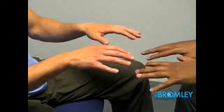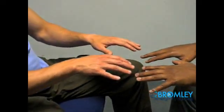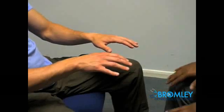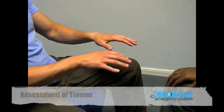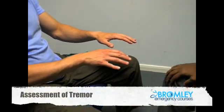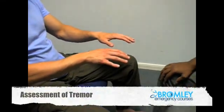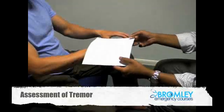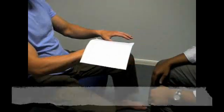Assessment of tremor can then be performed by asking the patient to stretch out his hands fully. If tremor is not obvious, place your palm against his outstretched fingers to feel for it, or alternatively place a piece of paper on the dorsal surface.